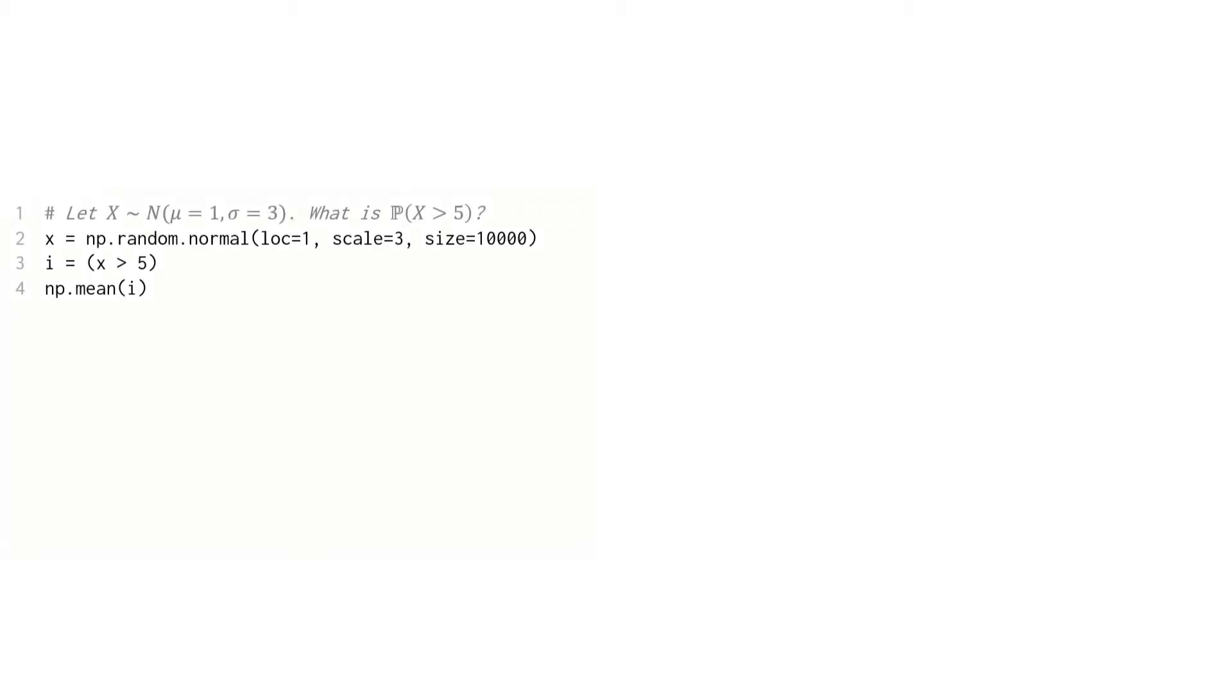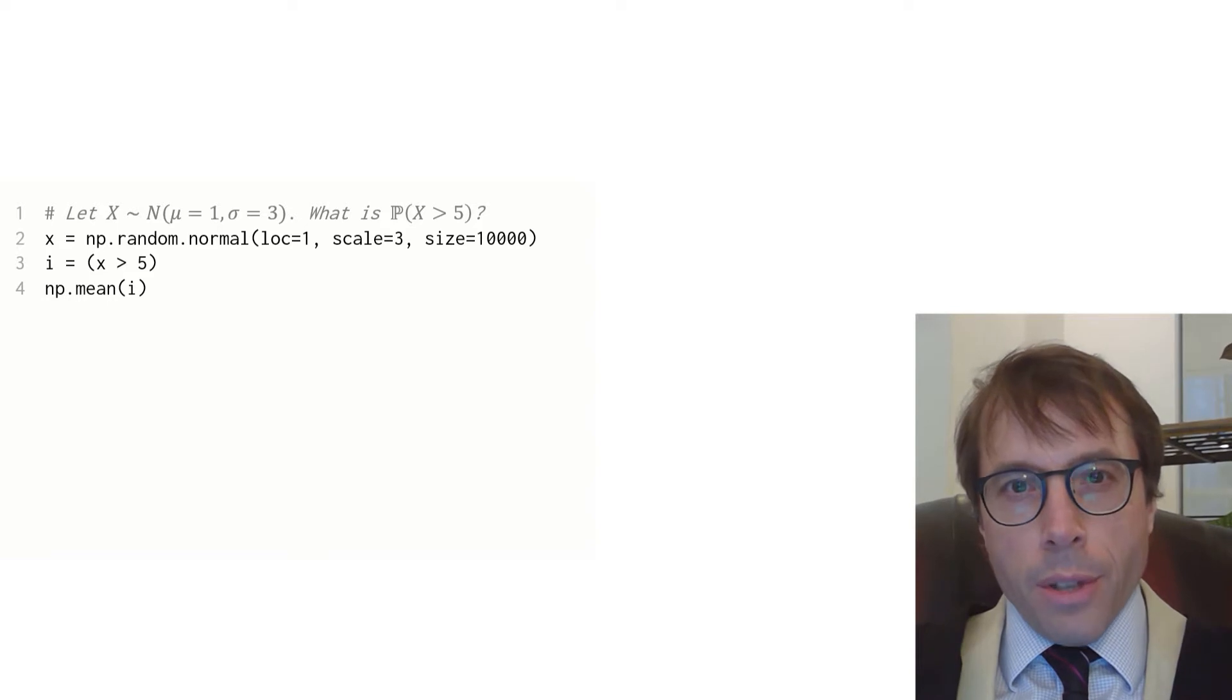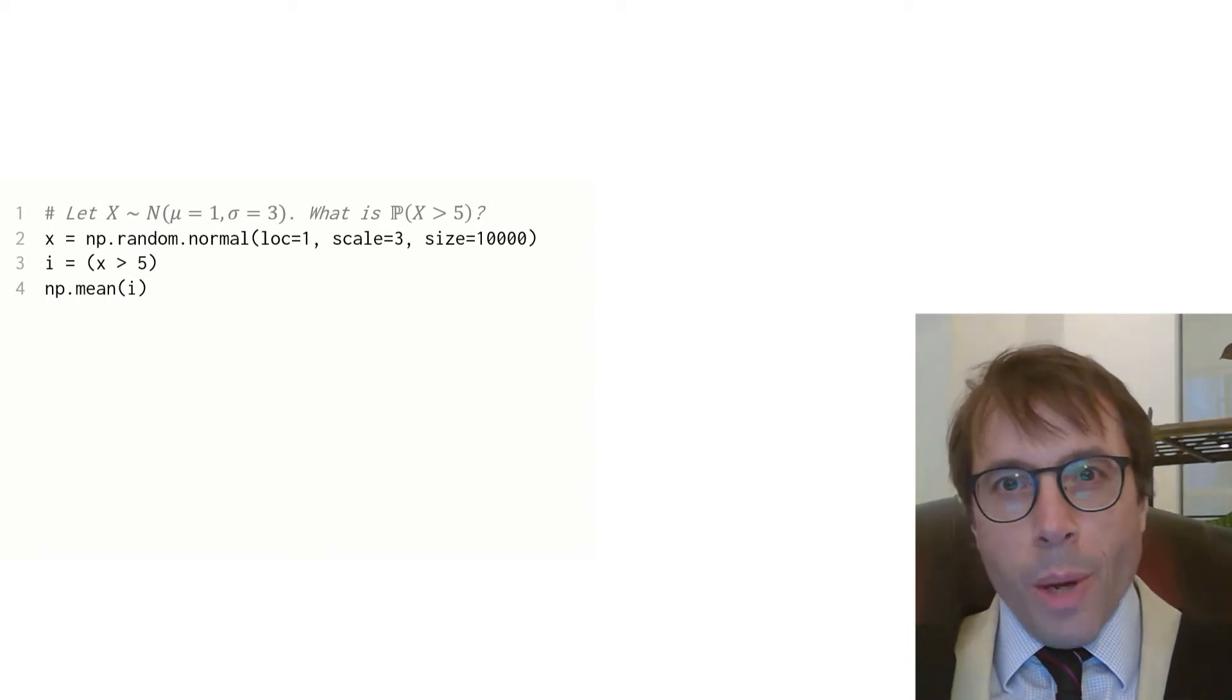Here's an example of Monte Carlo code. I'm told a random variable x, in this case normally distributed, and I want the probability of an event, in this case the event that x is larger than 5. Here's how I'd implement it in NumPy. I generate a sample of x values, say 10,000 of them. Why 10,000 you may wonder?